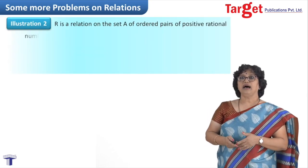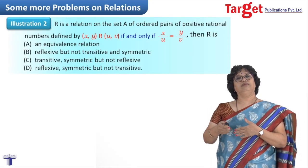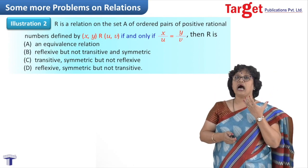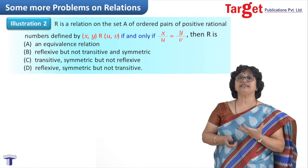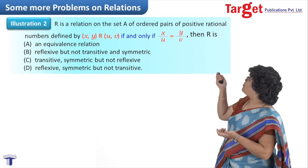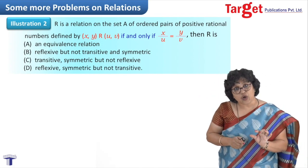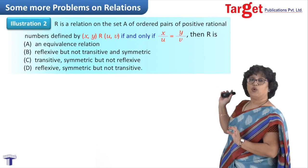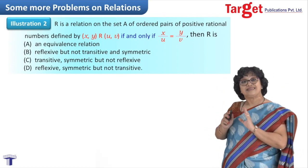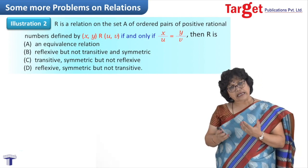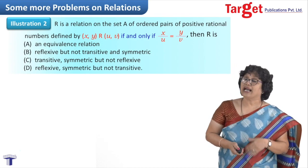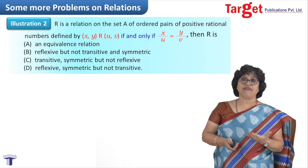The next problem: R is a relation on the set A of ordered pairs of positive rational numbers. The relation is described as: ordered pair (x, y) is related to ordered pair (u, v) if x upon u equals y upon v. This is how relation R is described. It looks a little complicated but please deal with it patiently. All four options are again regarding reflexive, symmetric, etc.